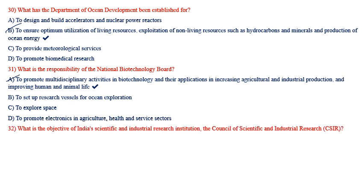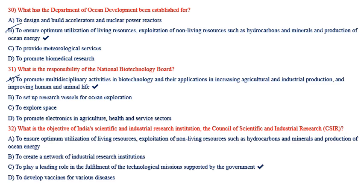What is the objective of India's Council of Scientific and Industrial Research (CSIR)? Options: to ensure optimum utilization of living resources and exploitation of non-living resources such as hydrocarbons and minerals; Option B — to create a network of industrial research institutes; Option C — to play a leading role in fulfillment of the technological missions supported by the government. Option C is the correct answer.